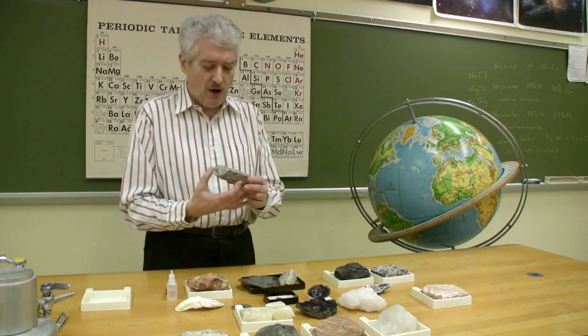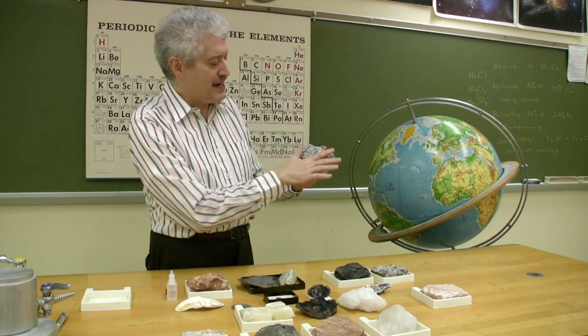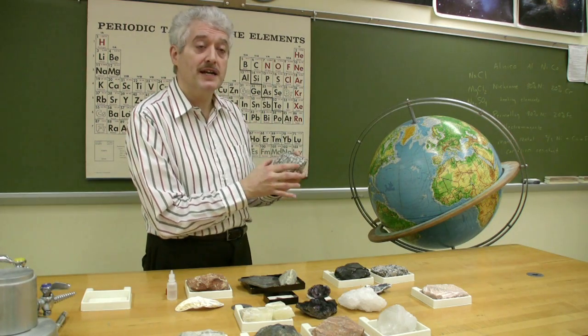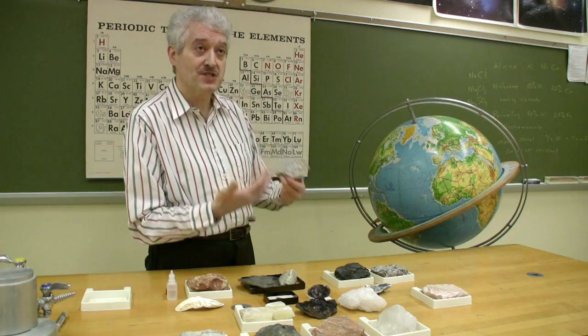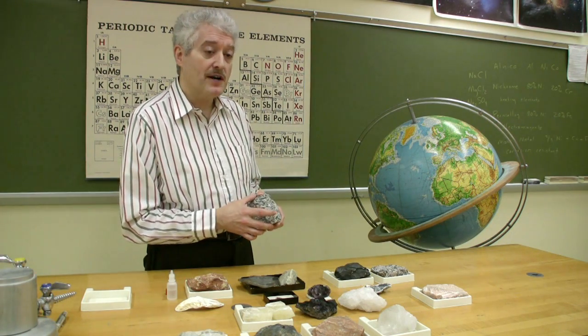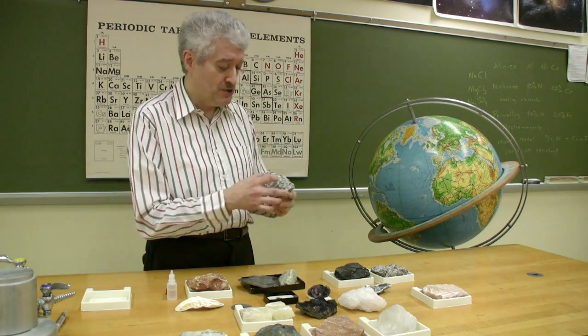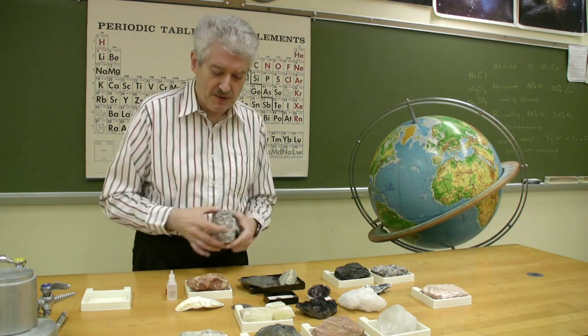In metamorphic rocks, you will sometimes see alignment of mineral grains, as in this specimen. And if you see that, that is a good indicator of metamorphism, but once again, you don't see that in all metamorphic rocks. And some sedimentary rocks have a little bit of an alignment too, although usually not as pronounced as these stripes.